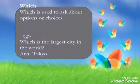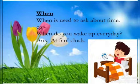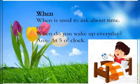Let's see some more question words. Which — which is used to ask about options or choices. See the example: Which is the largest city in the world? The answer is Tokyo. Now when — when is used to ask about time. When do you wake up every day? At 5 o'clock.